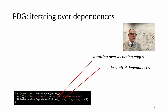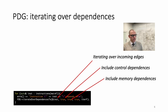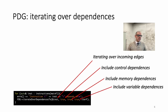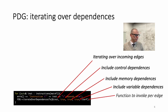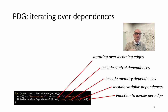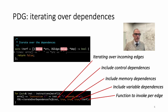Here is the API. You pass the instruction you want to iterate the incoming edges of, and then you specify filters. Filters are optional and you can use them to specify whether you want to iterate over all possible dependencies or a subset. For example, the first filter is a boolean: if you set it to true, it means you want to iterate also over control dependencies, not just data dependencies. The second filter turns on or off memory dependencies — dependencies that exist because two instructions may access the same memory location. The last filter includes or excludes variable dependencies, which are dependencies between two instructions that access the same variable — the def-use chain in LLVM basically. The last argument is the lambda function that will be applied at every dependence found by the framework.